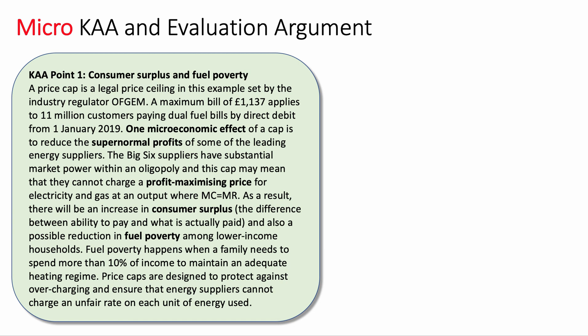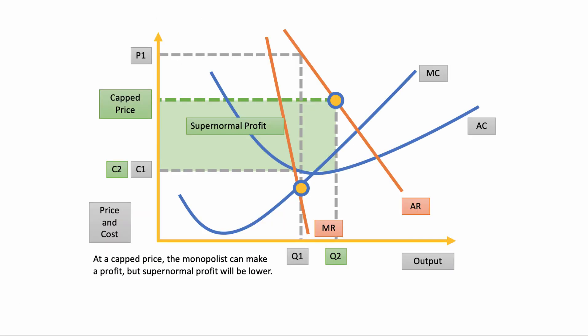You can support this with a diagram. If you've been revising your theory of the firm and monopoly diagrams, this diagram shows an inelastic demand for energy. The normal profit-maximisation output is Q1, where marginal cost meets marginal revenue, and they can charge P1. But if we introduce a capped price — a lower price, shown by the green line — then output goes up to Q2 and profit falls to the green shaded area. The energy supplier will still make a profit, but the supernormal profit will be lower and the consumer will pay the reduced price.